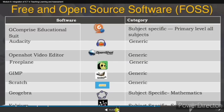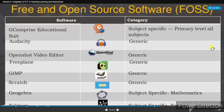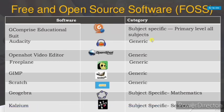Free and Open Source Software (FOSS) includes a tool called DAST — a compressed educational suite. The interface of this software is shown here. The categories within this software are subject-specific, primary level, all subjects, and generic.